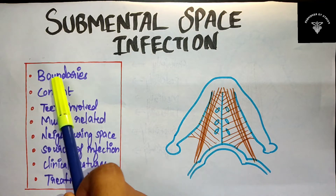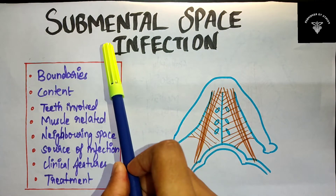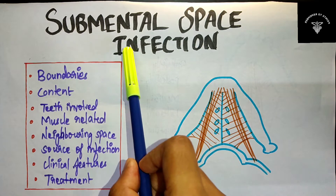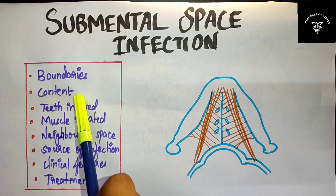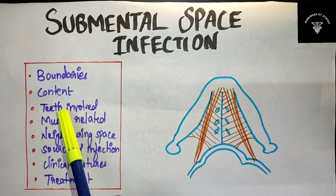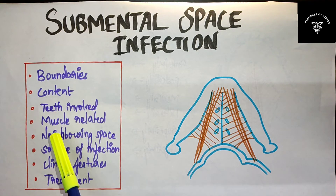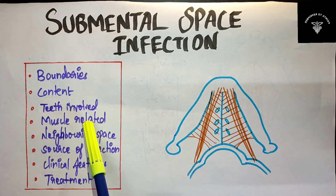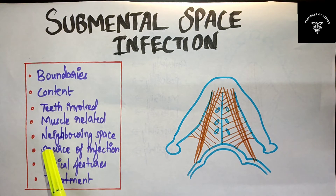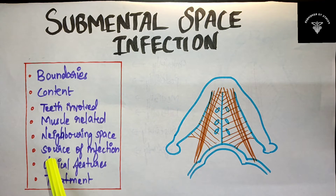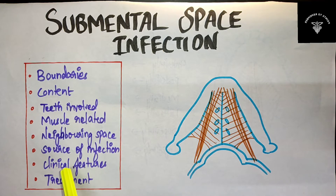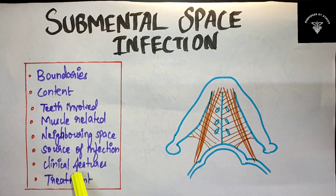First, you have to describe the boundaries of submental space infection, then the contents of submental space, and the teeth involved. Next, what are the muscles related to the submental space, the neighboring spaces, the source of infection, the clinical features, and finally the treatment of the submental space infection.